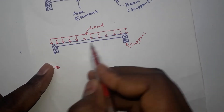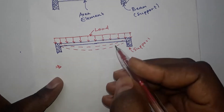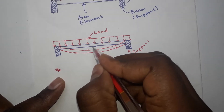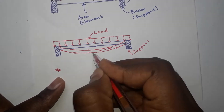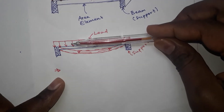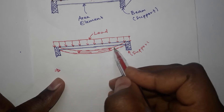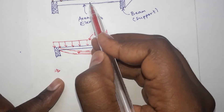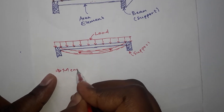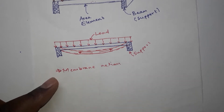So what will happen is this element will deform like this because it does not have any flexural rigidity or stiffness, so it will resist the applied loading by forming an in-plane stiffness. Due to this in-plane stiffness, this element will be safe against failure. This is what you call membrane action.